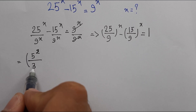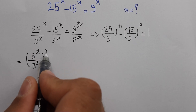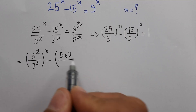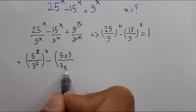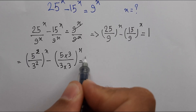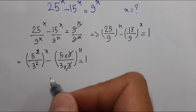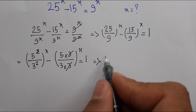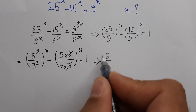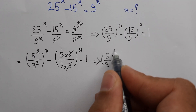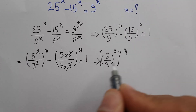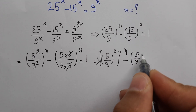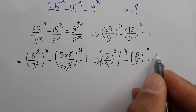We can rewrite 25 as 5^2 and 9 as 3^2, so 25^x over 9^x becomes (5/3)^(2x). And 15 over 9 simplifies — canceling a factor of 3 — to give (5/3)^x. So the equation becomes (5/3)^(2x) minus (5/3)^x equals 1.